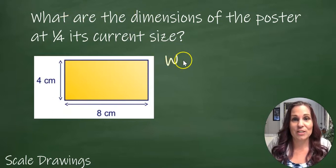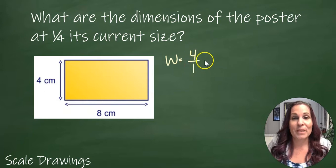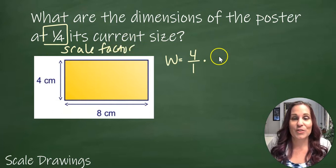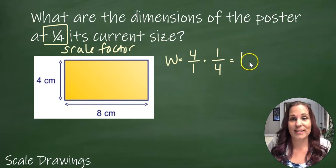I'm going to take the current width, which is 4 centimeters. I'm going to write that as a fraction and multiply that by 1/4 because that is my scale factor. So 1/4 multiplied by 4/1 gives me 1 centimeter, and that's my new width.